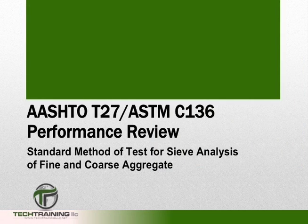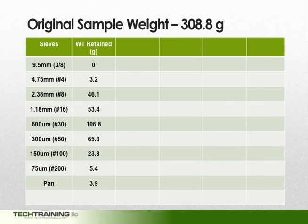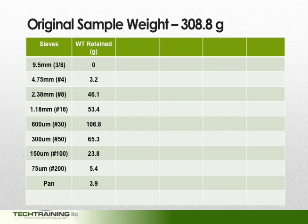Let's now go through an example of these calculations. Let's assume that we've done a fine aggregate sieve analysis, and our original sample weight was 308.8 grams. The fine aggregate sieve analysis requires the following sieves. After putting our material through the sieve shaker, we acquired the following masses: no material on the 9.5mm sieve, 3.2 grams on the 4.75mm sieve, and additional materials retained as listed.